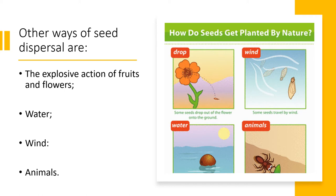When the fruits are very ripe or the flowers are very mature, they drop the seeds, and there will be the possibility of growing new plants. Water is also a bearer or carrier of seeds. Wind also contributes to dispersing seeds in many other places. Animals also contribute to dispersing seeds — for example, spiders or birds.